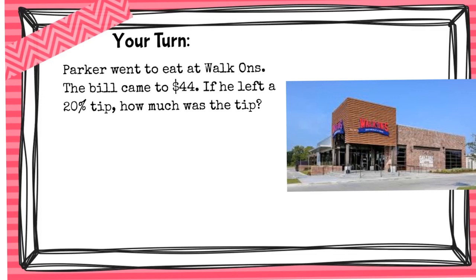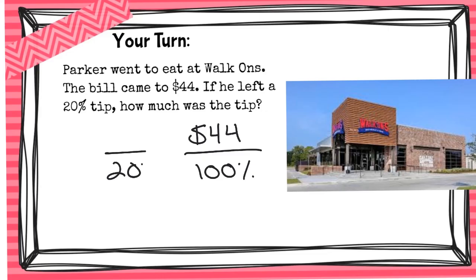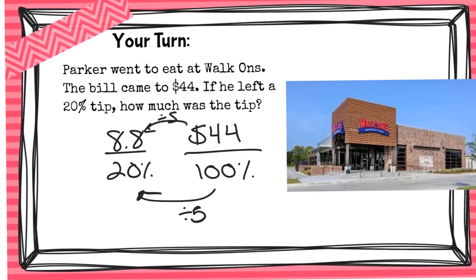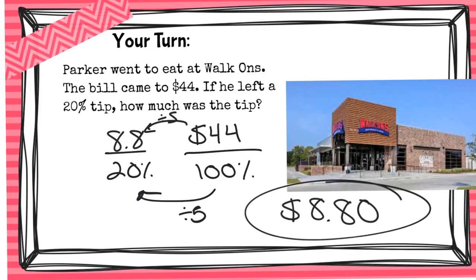Now it's your turn. Parker went to eat at Walk-Ons. The bill came to $44. If he left a 20 percent tip, how much was the tip? Let's go over it: $44 would be 100 percent, and we are trying to find the 20 percent, so we divide by 5. We need to do $44 divided by 5, which would be 8 and 8 tenths, which you should have said was $8.80 — not $8.08.